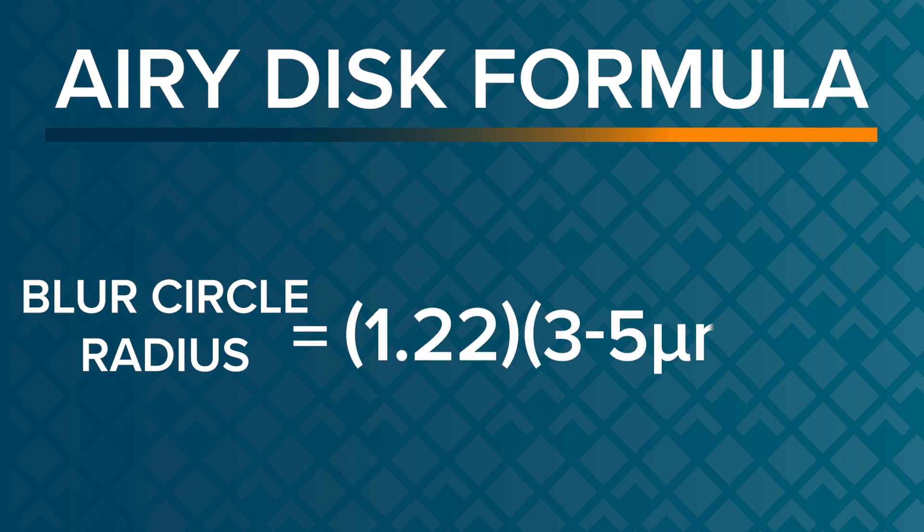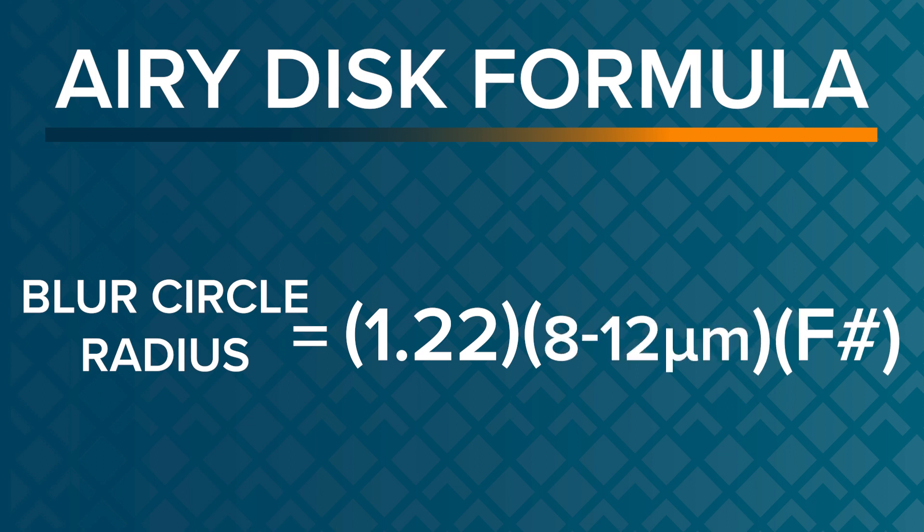The Airy disc formula involves a constant of 1.22 times the wavelength of the light you're operating in. We operate in the mid-wave band of 3 to 5 microns and the long-wave band of 8 to 12 microns. The Airy disc — meaning the blur circle, or how much diffractive blur you get on a point source coming through the lens onto the sensor — is simply 1.22 times the wavelength of light times the F number.